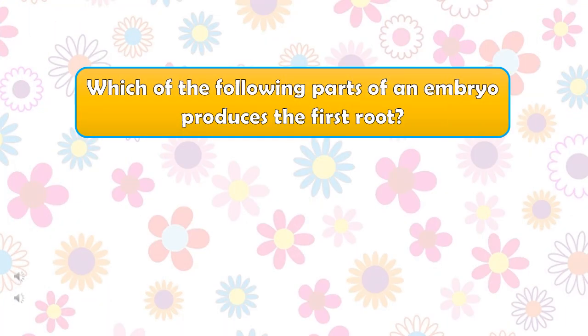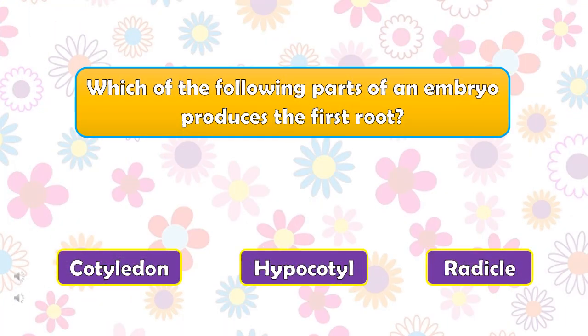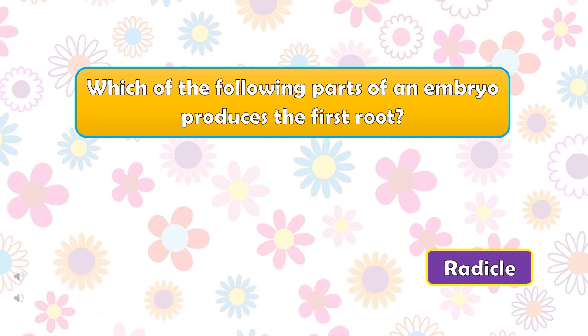Which of the following parts of an embryo produces the first root? The right answer is radicle.